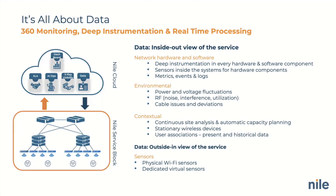On top of that, environmental factors — power fluctuations, voltage fluctuations — we monitor whether it's fiber or copper. We monitor RF, noise, utilizations, and interference. And more importantly, we also monitor what we call contextual, which is user and device behavior.